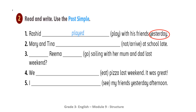Now check your answers. Number two: 'Mary and Tina didn't arrive at school late.' Number three: 'Did Reema go sailing with her mom and dad last weekend?' Number four: 'We ate pizza last weekend — it was great.' Number five: 'I saw my friends yesterday afternoon.' You did a great job!